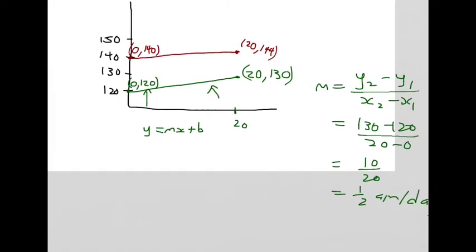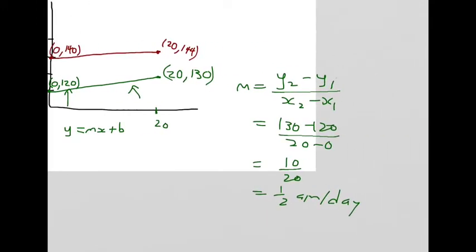Putting that into slope intercept form, the height of the tree - I'm going to use h instead of y - equals half a centimeter per day plus the initial height which was 120.